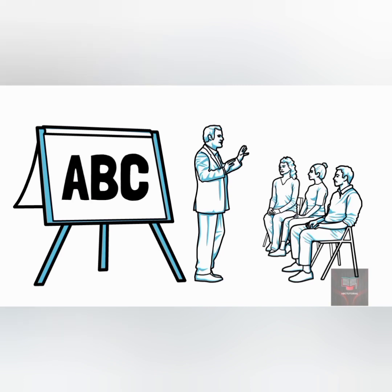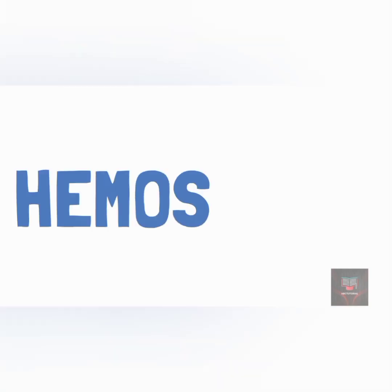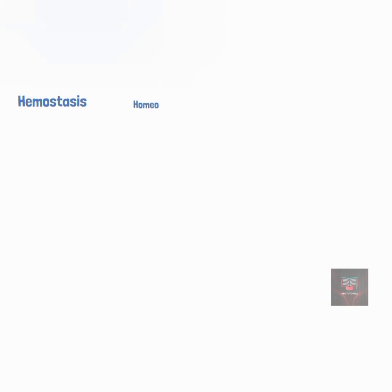Welcome to ABC tutorial. Today we'll be talking about hemostasis. Hemostasis is not to be confused with the very similar term homeostasis. It is a sequence of responses that stops bleeding and limits the amount of blood loss when blood vessels are damaged or ruptured. The hemostatic response must be quick, localized to the region of damage, and carefully controlled in order to be effective.